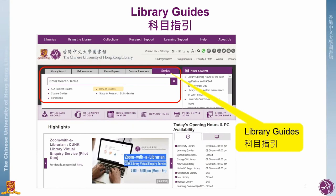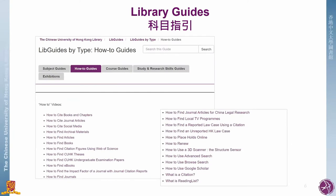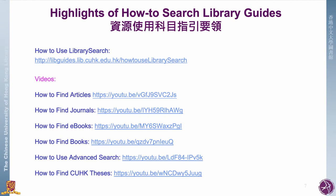There are many library guides introducing the detailed steps of how to search specific resources. If you click the how-to guide, you will see a series of links. Here are some highlights of the guides. The first link is a guide introducing the use of Library Search; the other is a YouTube video introducing all the steps for searching different materials. You can find these links in the description or notes field of this video.